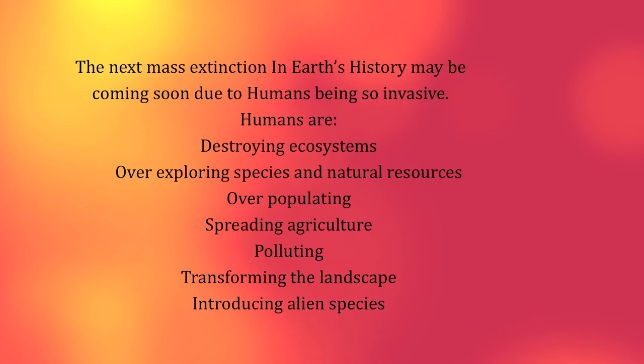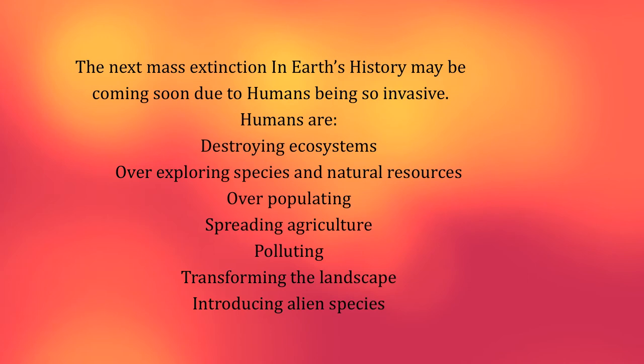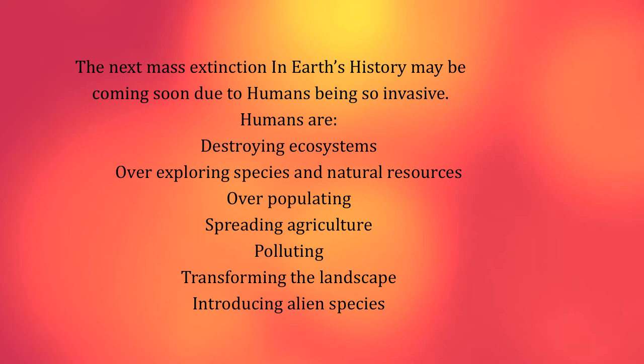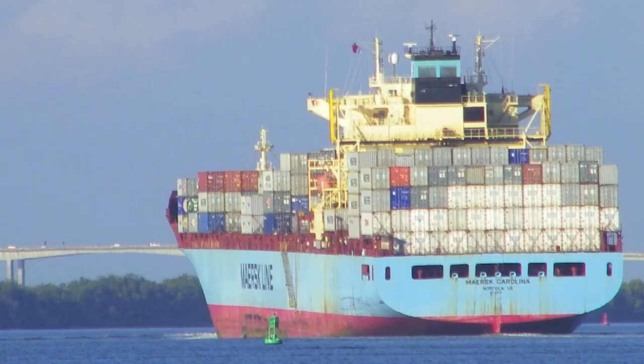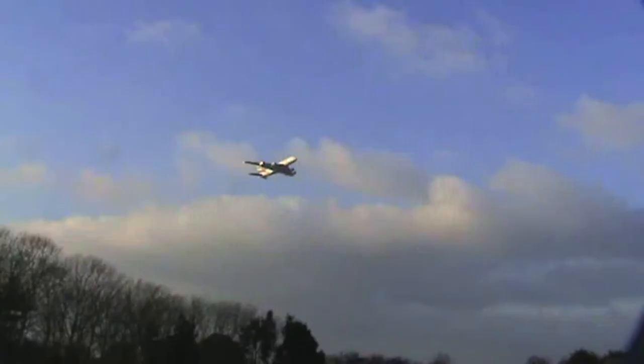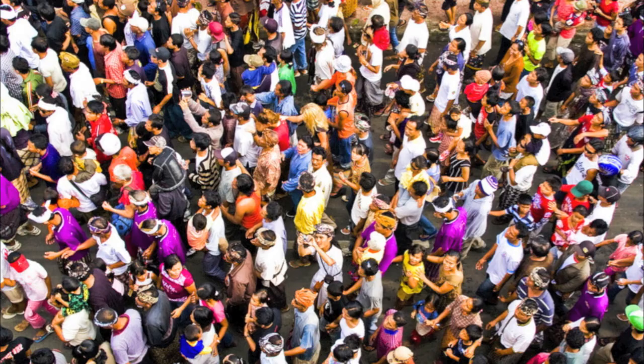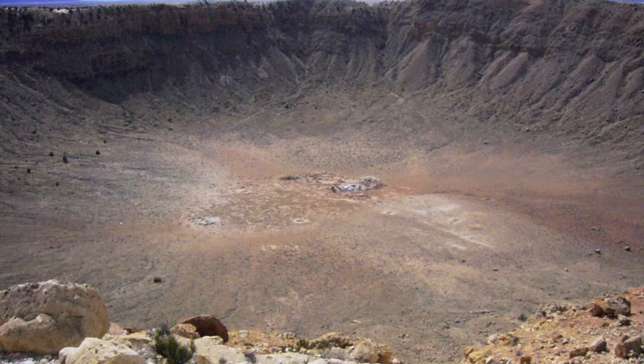Humans are destroying ecosystems, over-exploiting species and natural resources, over-populating, spreading agriculture, polluting, transforming the land, and introducing alien species that humans intentionally and unintentionally introduce by way of cargo ships and airplanes from global trade. With our destructive nature, the next extinction will be caused by a biotic source rather than a physical source.